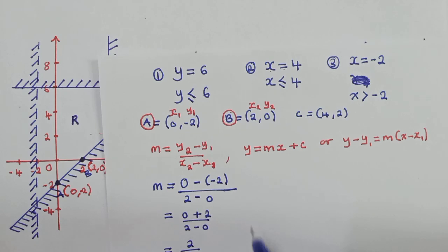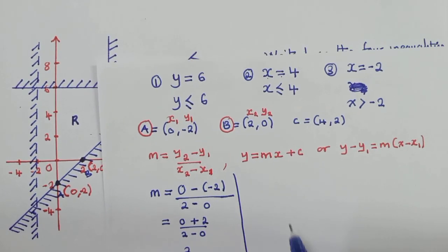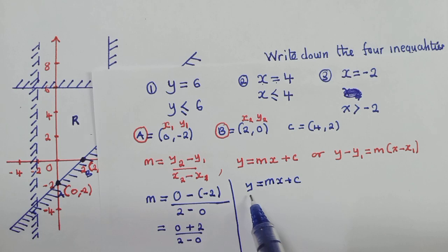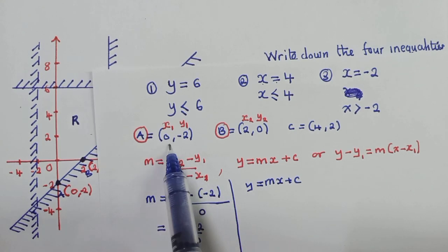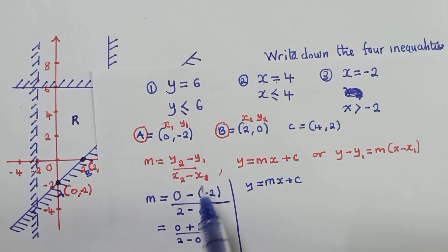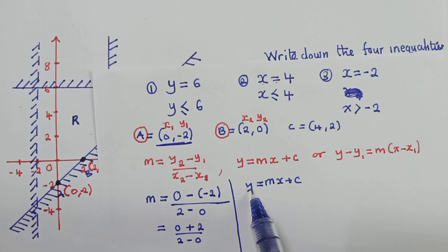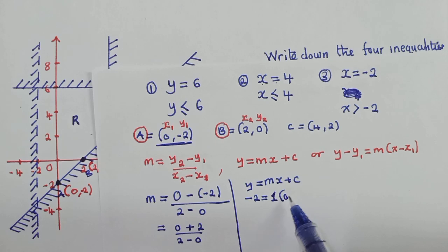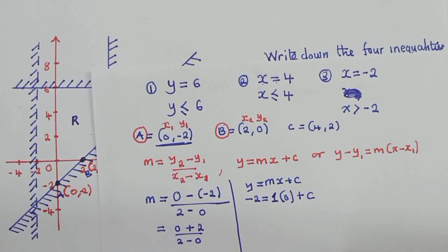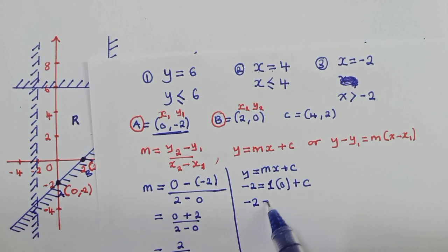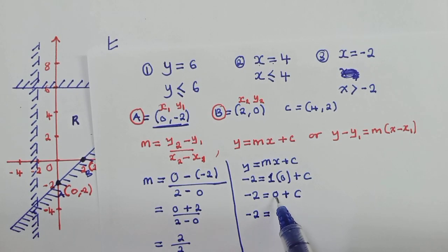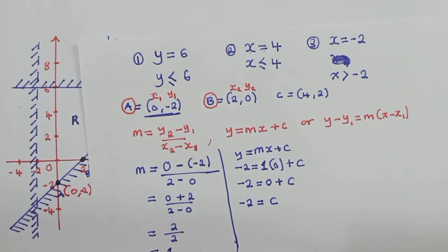Now we know the gradient is 1. We go to the equation y = mx + c. Using point A, which is (0, −2): y = −2, m = 1, x = 0. So −2 = (1)(0) + c, which gives −2 = 0 + c, therefore c = −2.